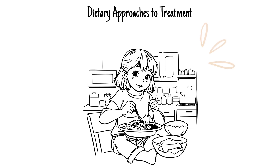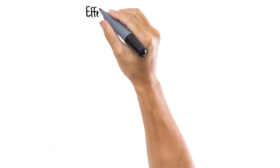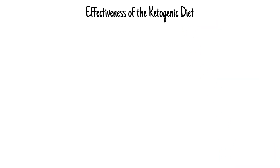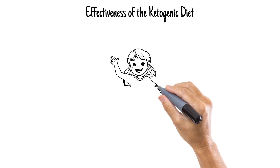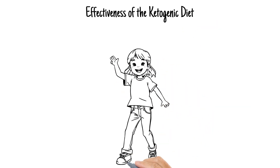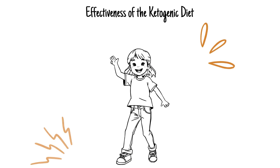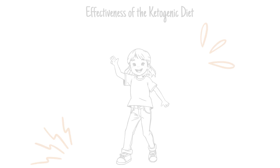The ketogenic diet is a high-fat, very low-carb diet that shifts the body into a state of ketosis, which has been shown to reduce seizure frequency in drug-resistant epilepsy, including some absence seizures. Studies have found that up to 50% of children on the ketogenic diet experience at least a 50% reduction in seizures. It's not a magic bullet, and it needs to be done under strict medical supervision, usually with a dietician or neurologist, but it can be a game-changer for some families.